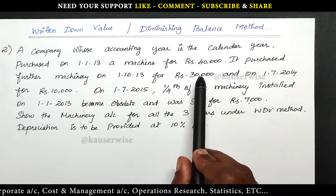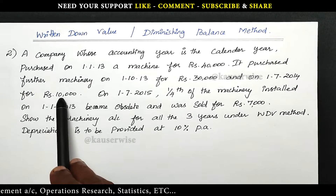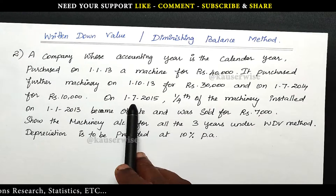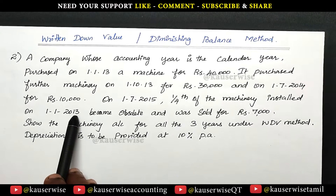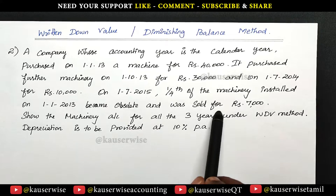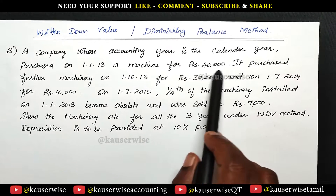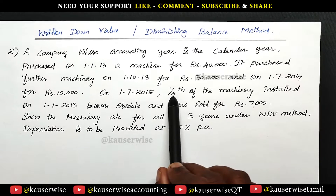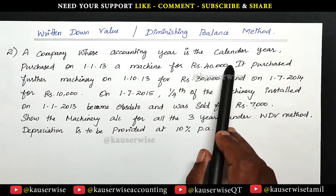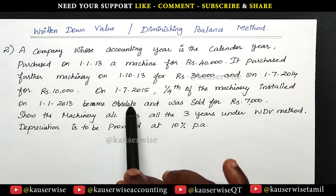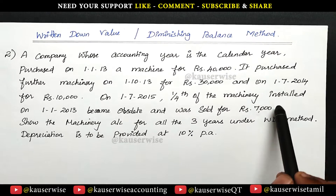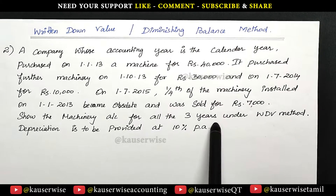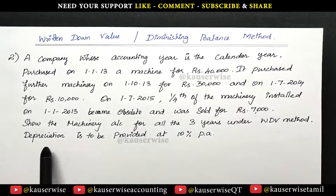So the 1st machinery cost Rs. 40,000, 2nd machinery Rs. 30,000, and 3rd machinery Rs. 10,000. On 1st July 2015, one-fourth of the machinery installed on 1-1-2013 — that is the first machinery — became obsolete and was sold for Rs. 7,000. Not the entire machinery, only one-fourth, meaning 25% of the first machinery, became obsolete — that is, outdated. They have sold it for Rs. 7,000. With this information, they are asking you to show a machinery account for all three years under WDV method. Depreciation is to be provided at 10% per annum.